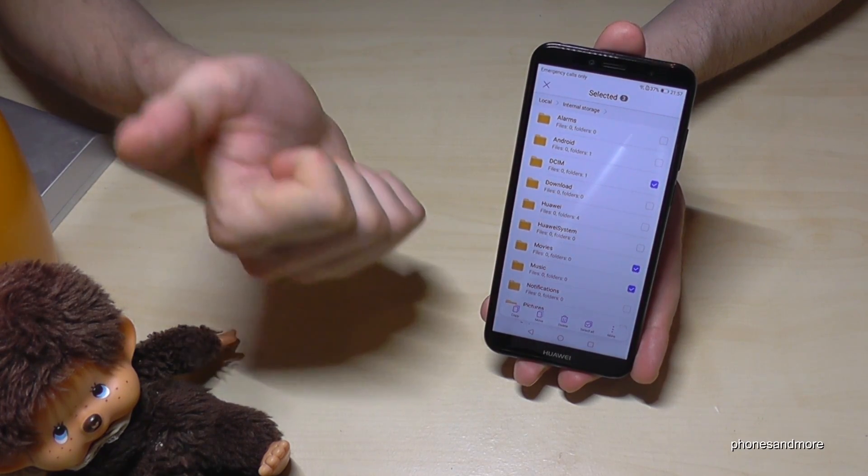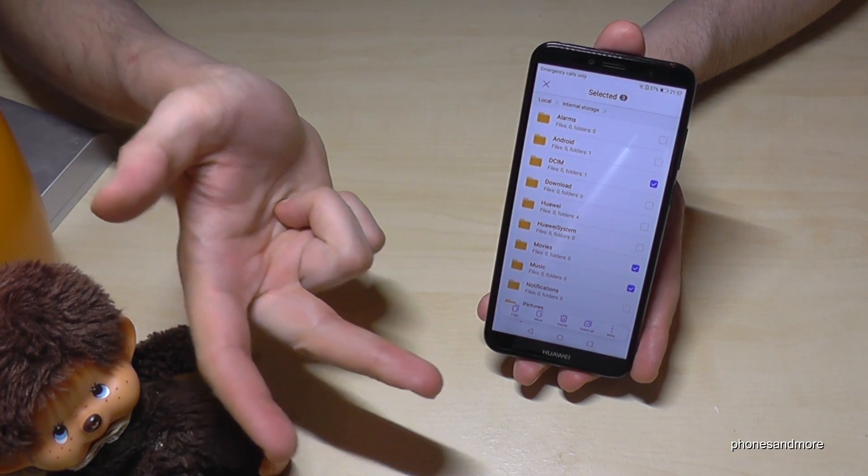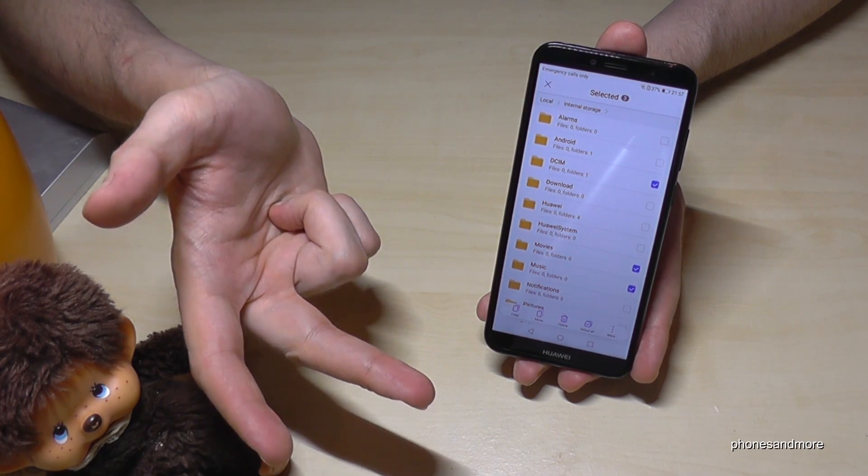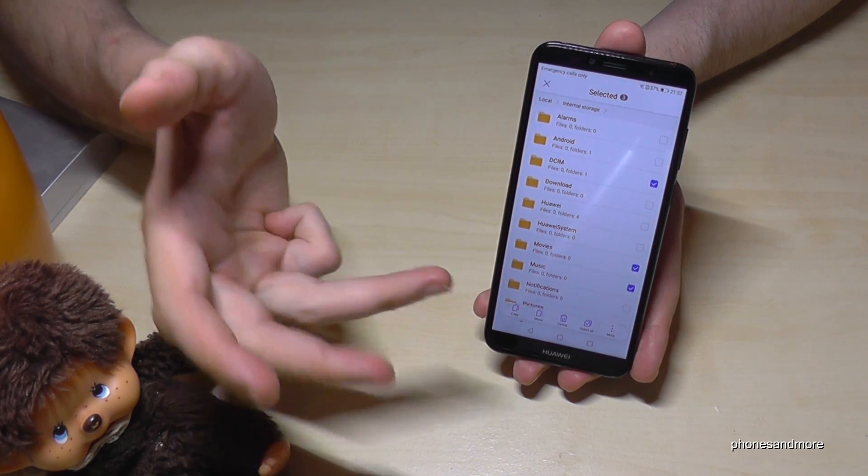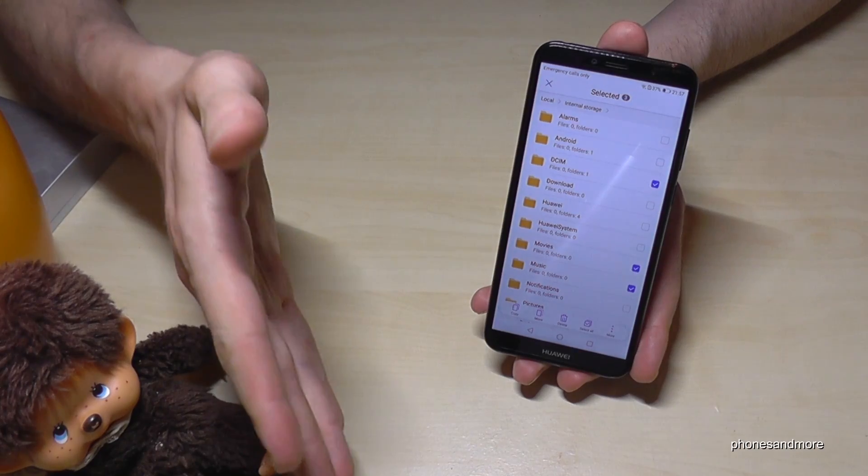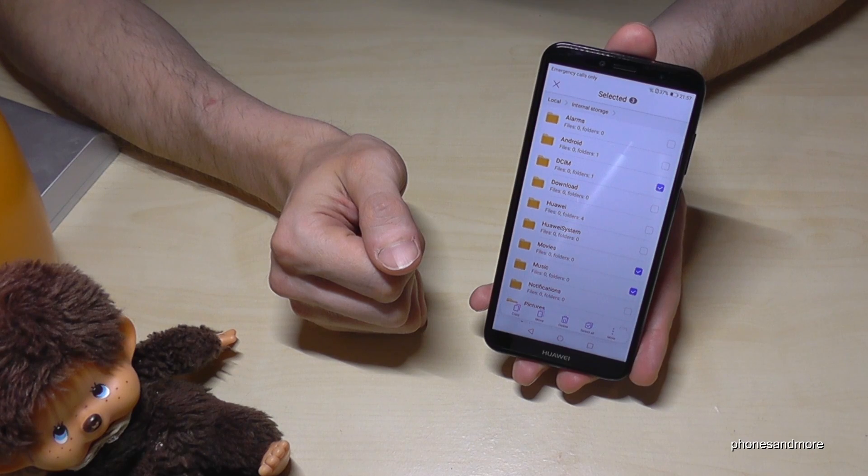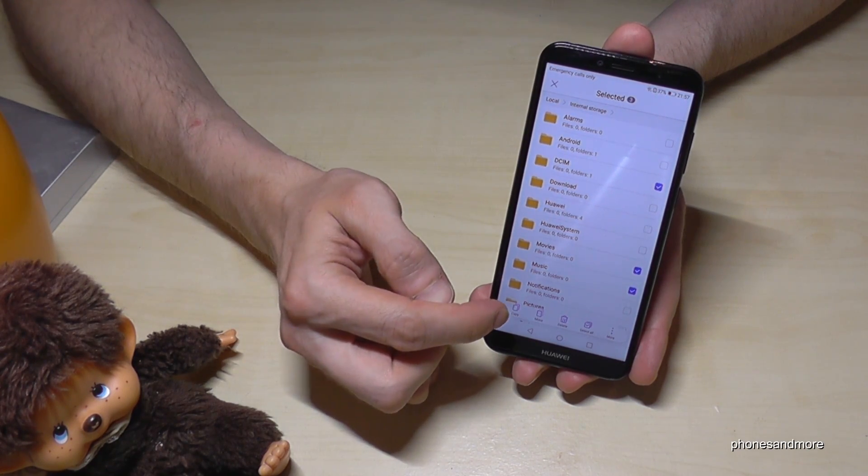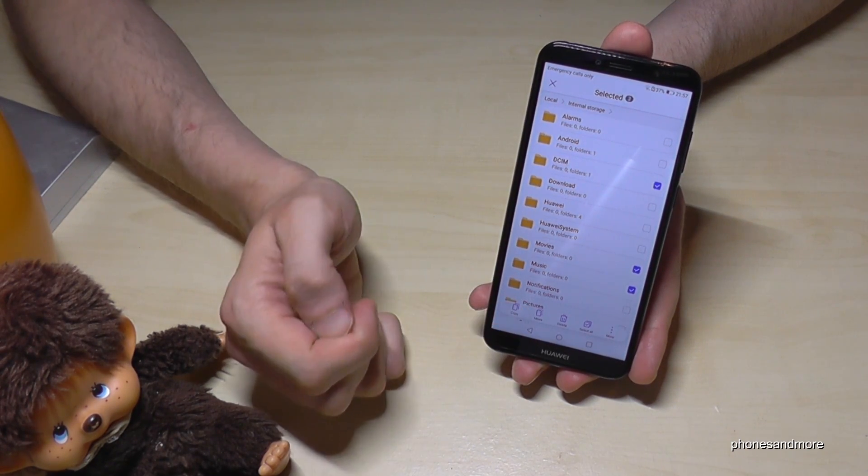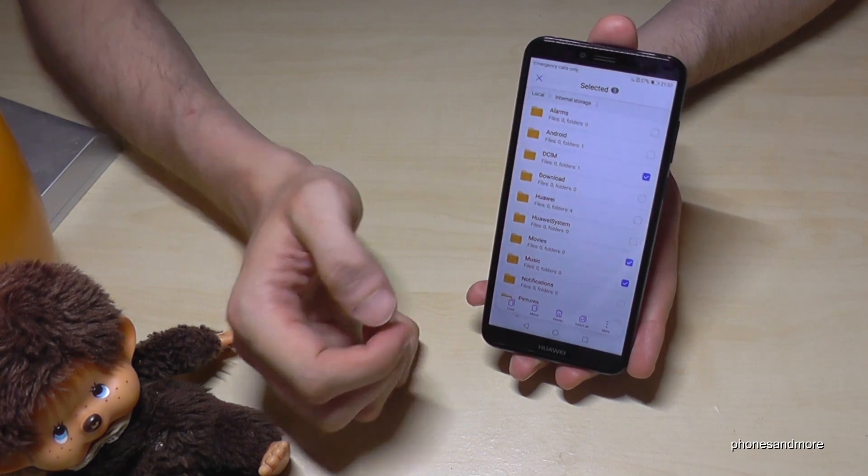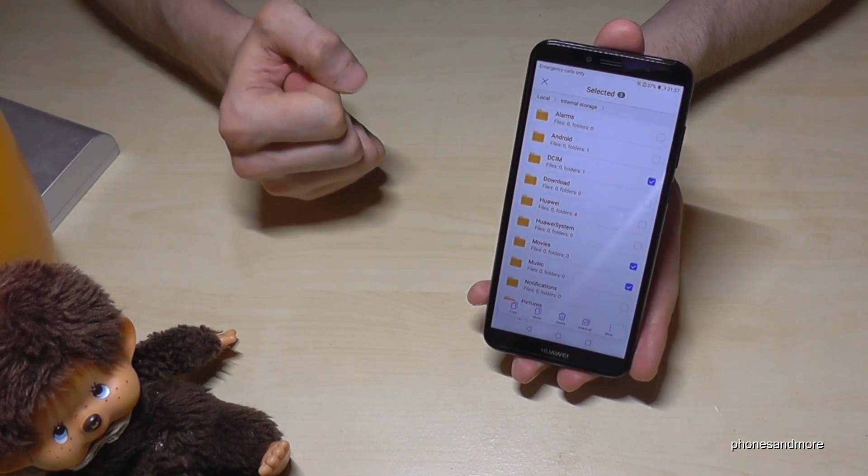So just move audio files, video files, documents like PDF files or something like this. Pictures. You can also go on WhatsApp images and transfer the pictures there or messenger pictures and so on. And then also go on copy or I always suggest you to go on move. Because then you will have more space on internal storage.